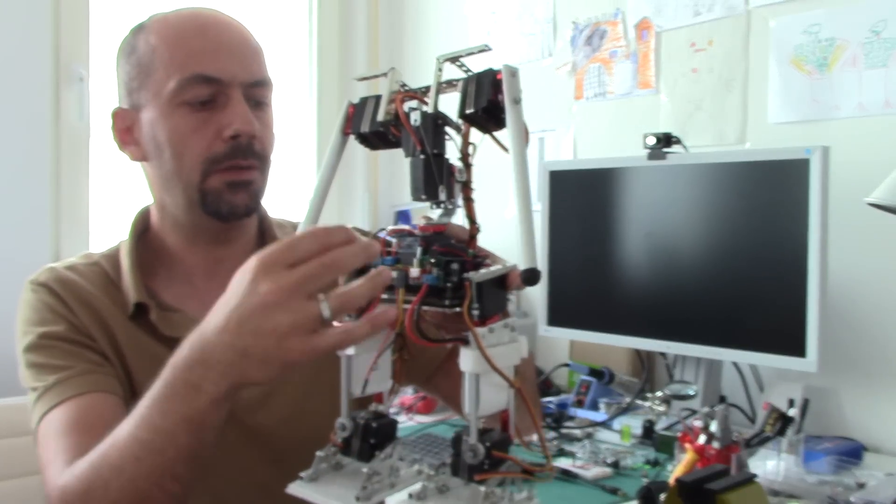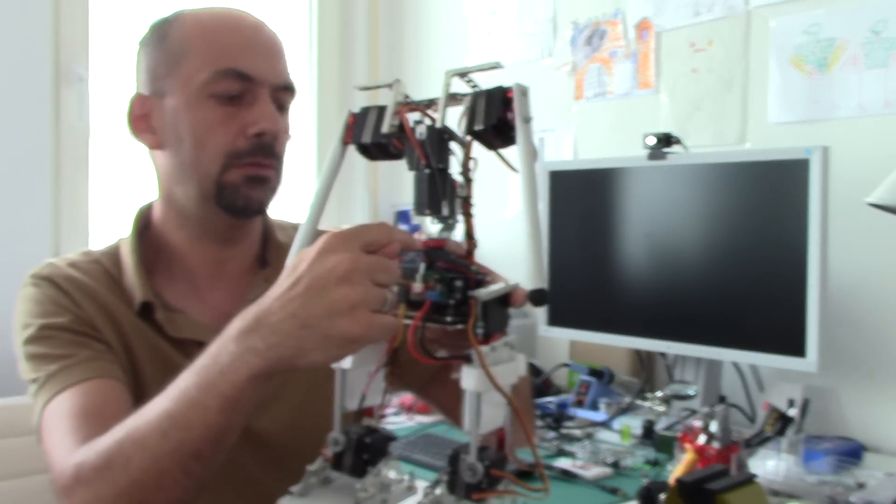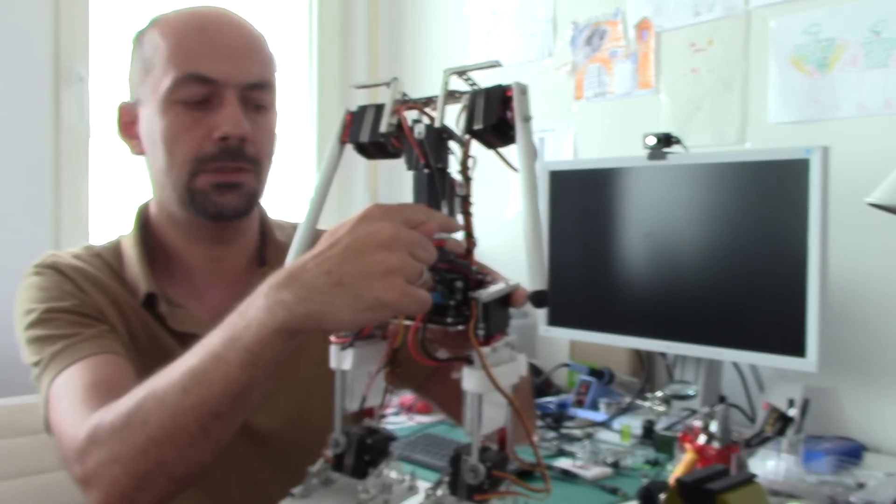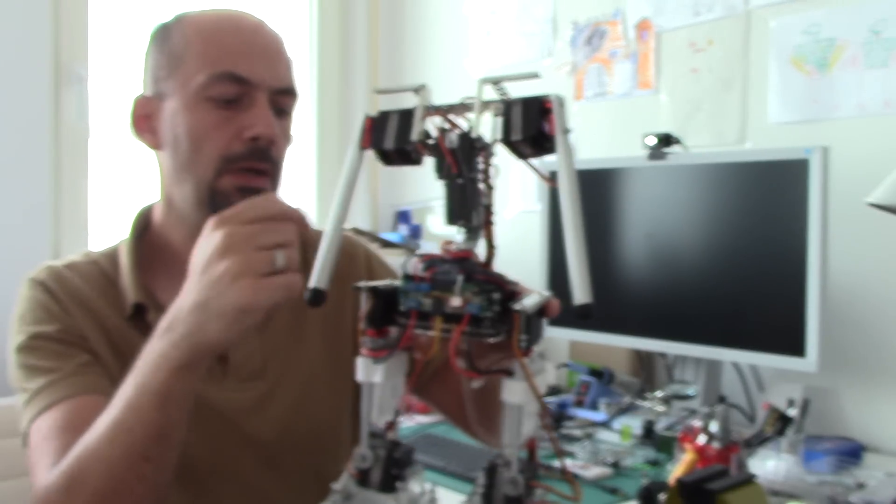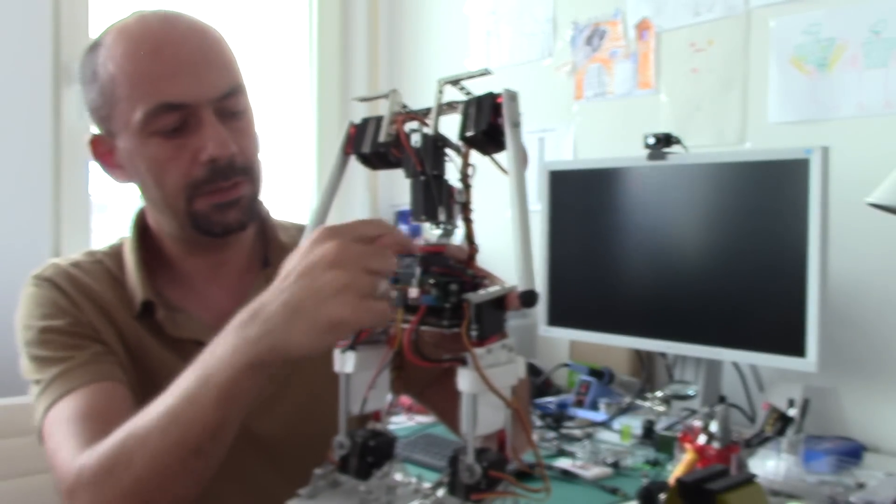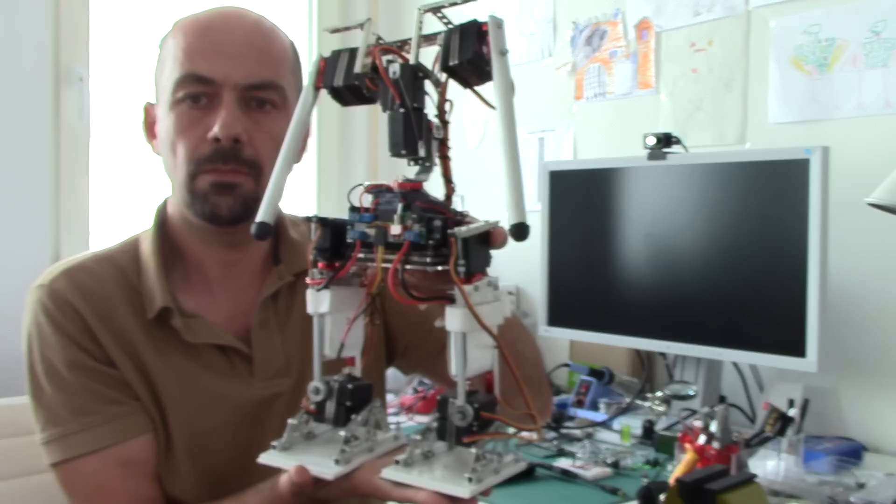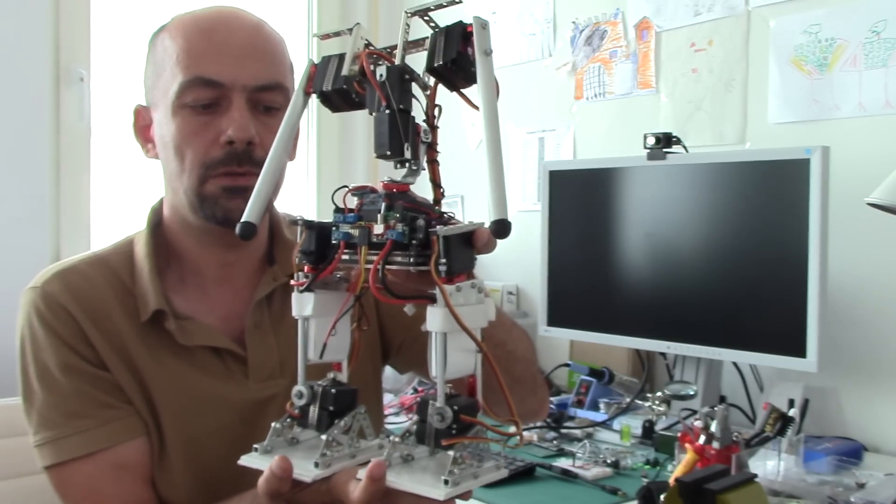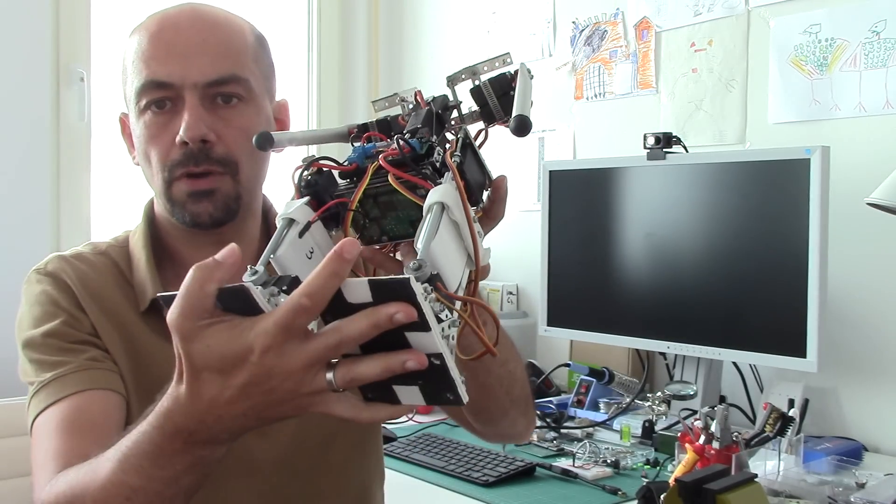And that's actually converging the power from here and distributing it to two step-down converters. One is here and one is there. This one is feeding the new computer because I moved away from the Arduino Nano to a Raspberry Pi 2.